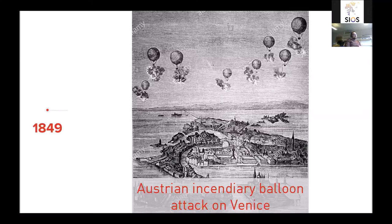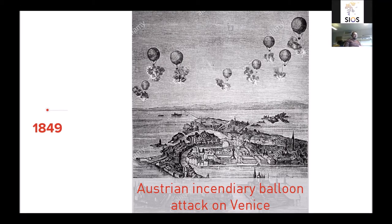The story of drones starts quite early — maybe earlier than you'd expect. In approximately the 1850s, the Austrians launched an attack on Venice and some engineers had the idea to put bombs on balloons and let them fly over the city to start fires. This didn't quite work as intended — most of the balloons, due to wind direction, actually flew over their own troops and caused a bit of chaos there, and some that reached the city didn't do much damage.